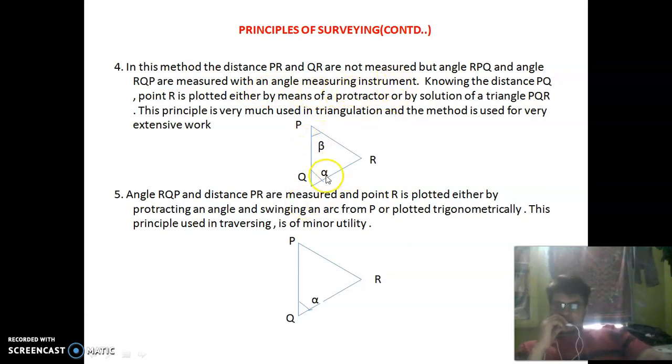The angle measuring instrument measures the alpha and beta angles. We measure these angles but omit the distance measurements.